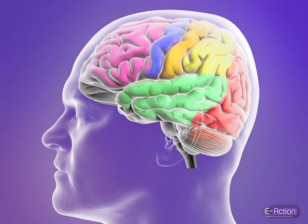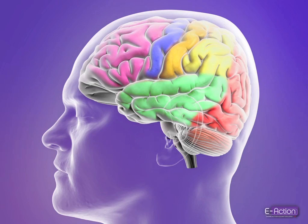The brain is divided into functional regions. Certain areas are responsible for conducting specific functions within the body. By observing the motor manifestations and sensory responses during the seizure, the neurologist may be able to determine the brain region affected.